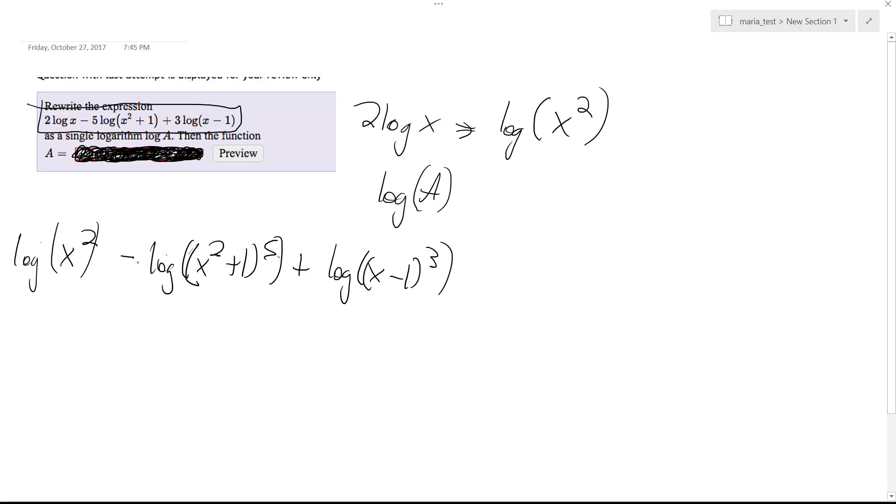So now I combine these. Subtracting is the same thing as division with logarithms, and addition is multiplication. So this is going to be log of x squared times x minus 1 cubed, divided by x squared plus 1 to the 5th.